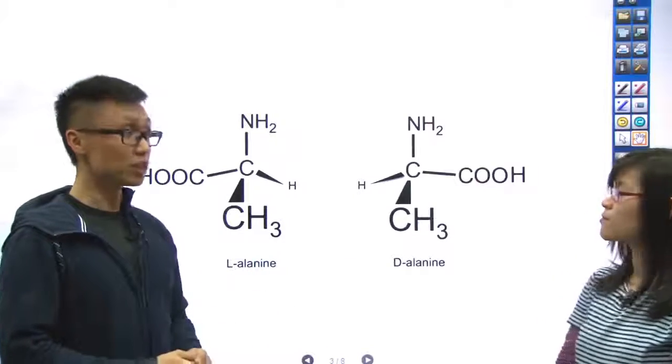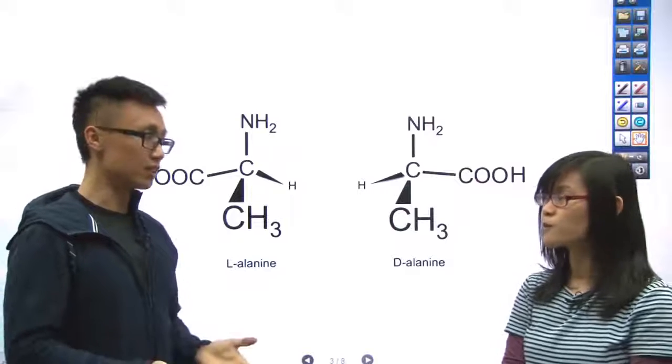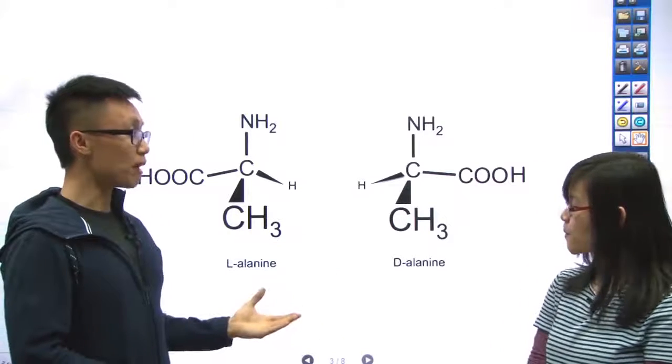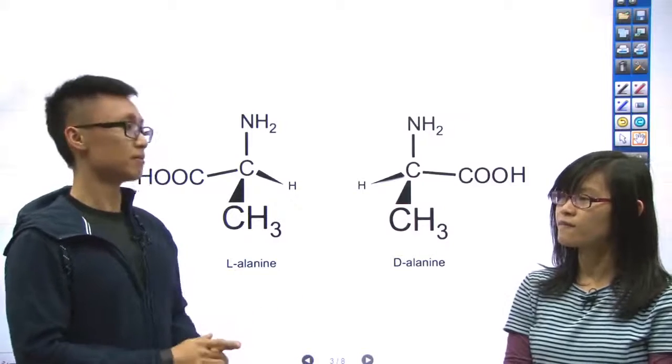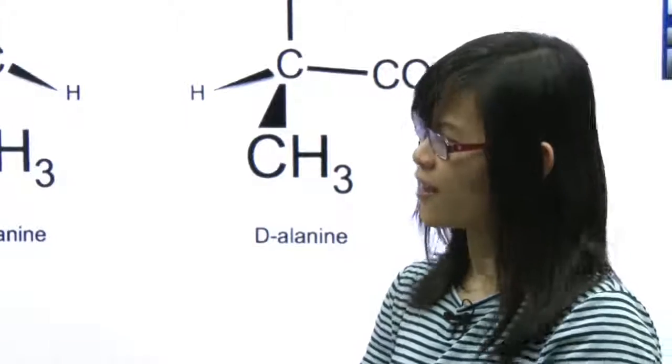D and L are what we say as enantiomers or mirror images. They are basically two compounds that look almost similar to each other, but they actually are not the same. Mirror images? Like how?